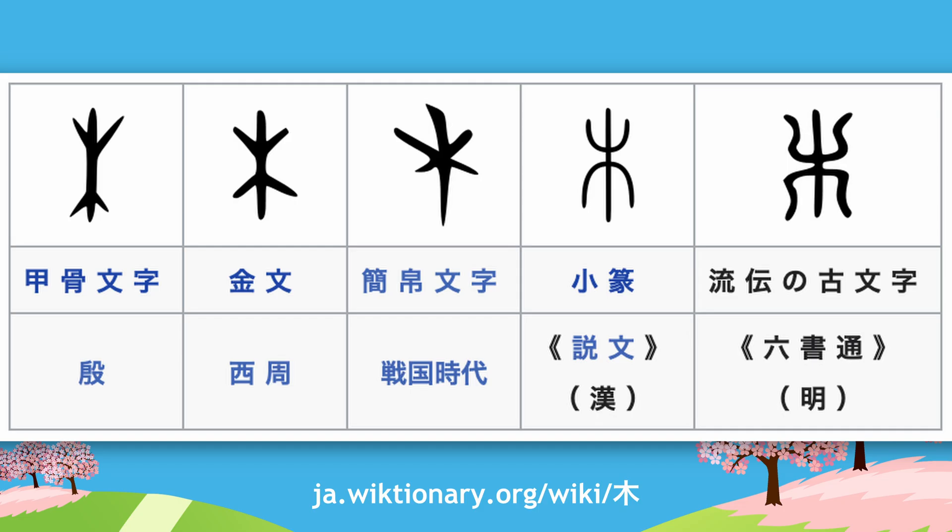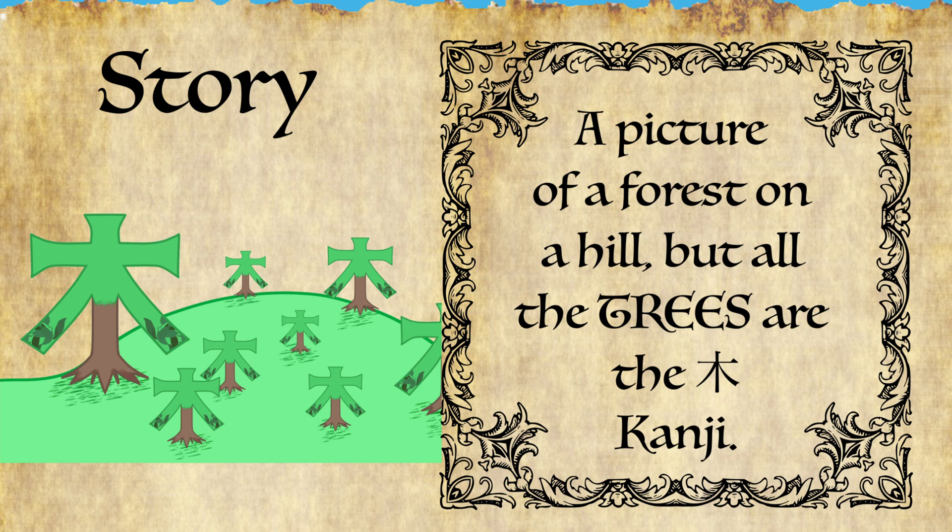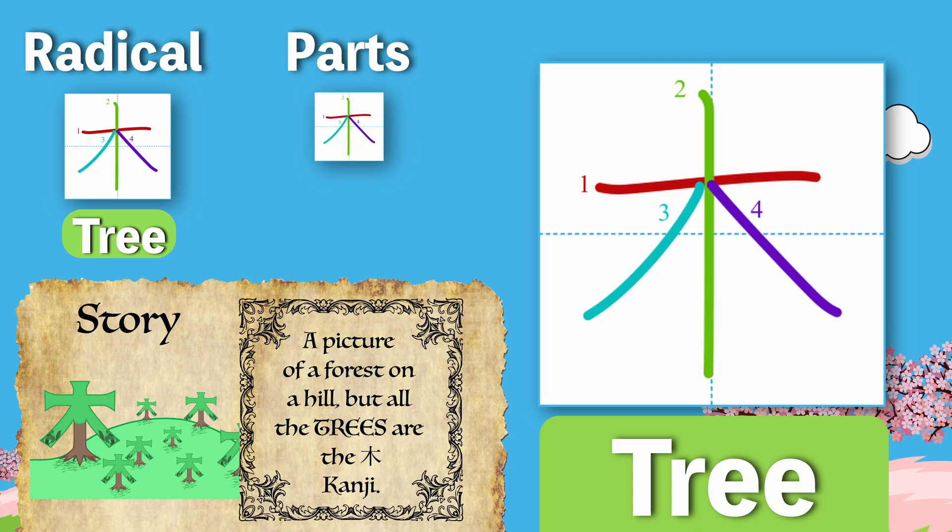Historically this one looks a lot like some ancient juridic runes or something, which I think is very appropriate considering the meaning of the kanji. I really like all versions of this character, past and present. The story we'll use is more of a pictograph: a picture of a forest on a hill. But all the trees are the tree kanji. If you like this picture, please don't forget to hit the like button. We'll be using this tree character whenever it shows up in another kanji as a radical. So if you did like it, you'll get to see it a lot.